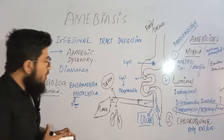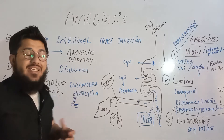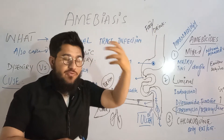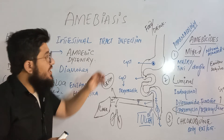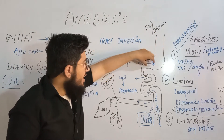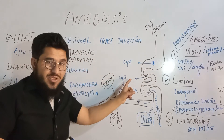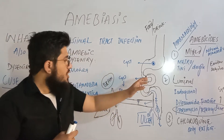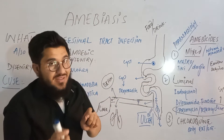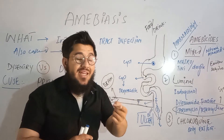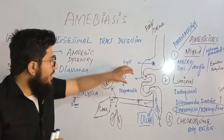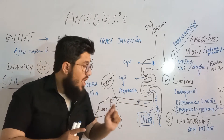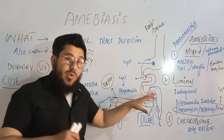How does Entamoeba histolytica infect the intestine? Food or drinks contaminated with Entamoeba histolytica enter through the mouth, pass through the stomach, and reach the small intestine. As the cyst — which is the Entamoeba histolytica form — reaches the large intestine, it begins to multiply. Multiple copies are synthesized; these mobile copies are called trophozoites. So the cyst is converted into trophozoites.